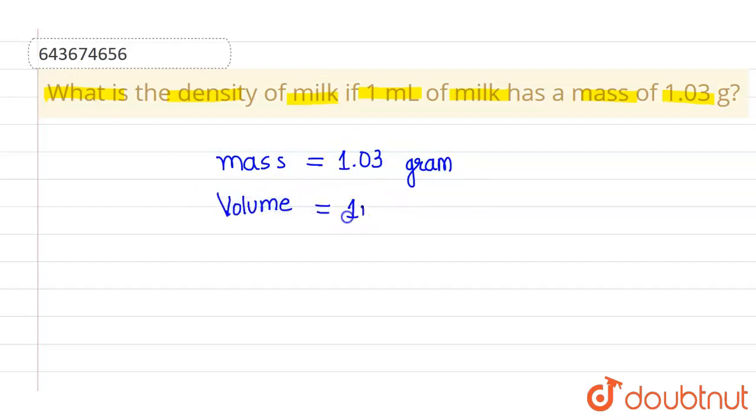1 milliliter can also be written as 1 centimeter cubed, because 1 milliliter equals 1 centimeter cubed.